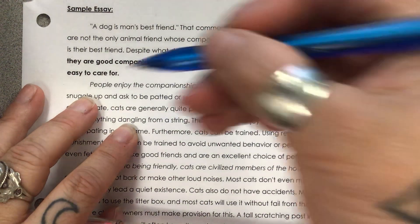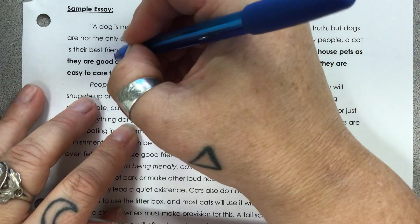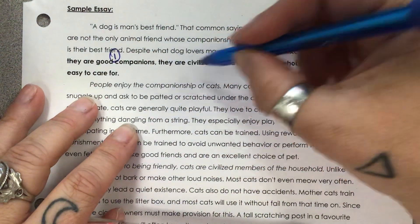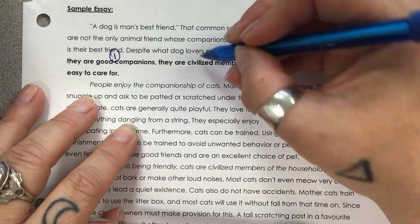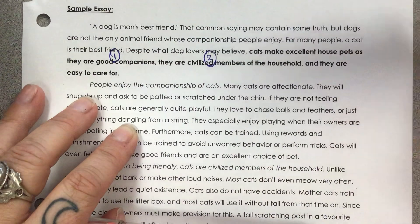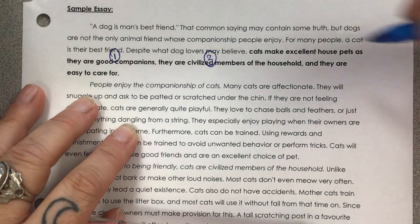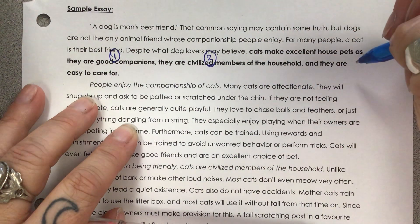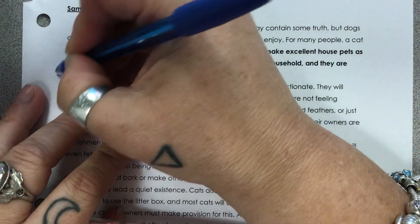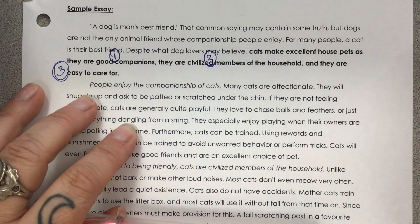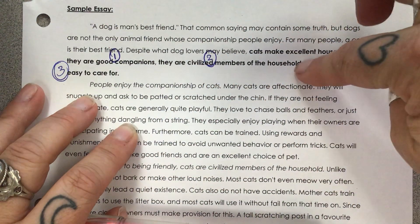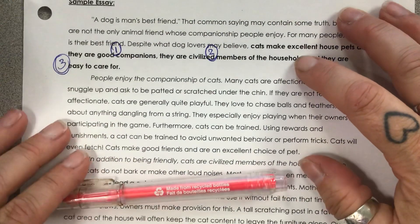The first body paragraph is going to be about how cats are good companions, the second is going to be about how they are civilized members of the household, and the third body paragraph is going to be about how they are easy to care for. Those are my three topics for my body paragraphs.